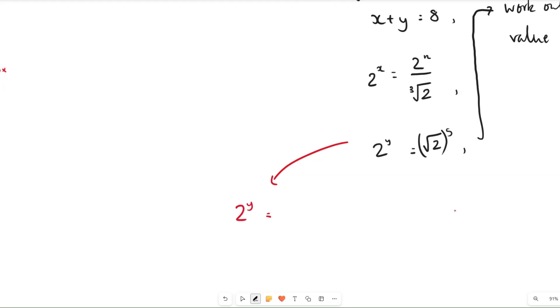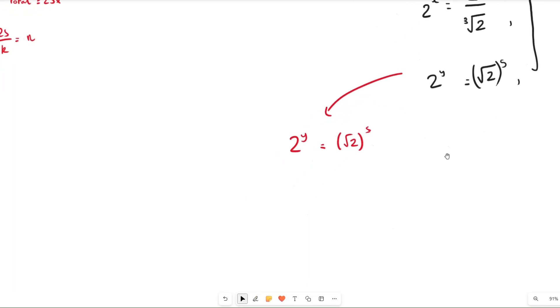So I'm just going to rewrite it: 2 to the power of y equals the square root of 2 to the power of 5. So let's look at our index laws for the right hand side of this equation. If we have a square root of something, what's that going to mean? It means that number is raised to the power of a half.